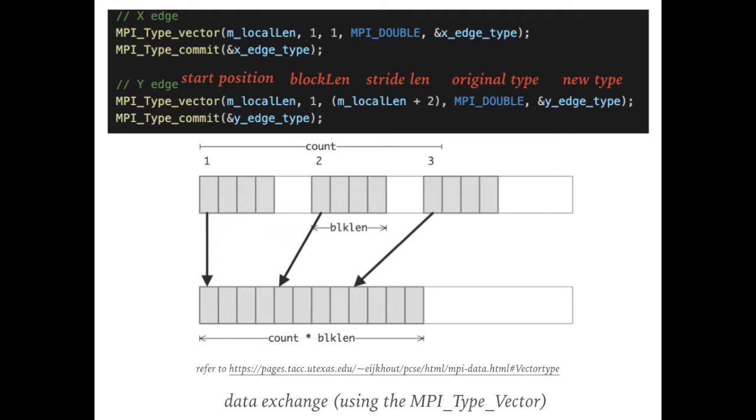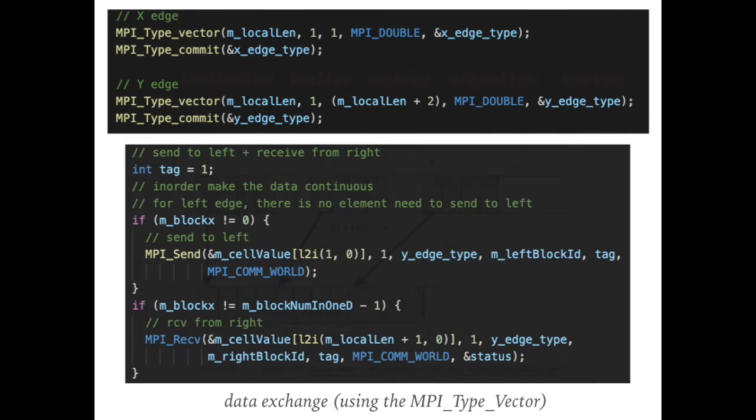The code of the ghost data exchange will be simplified by using the customized type. We can just reuse the original send and receive function with this new data type, instead of writing a large for loop to select proper value by ourselves. This method is also used for three-dimension cases. The ghost area will be a face in that scenario.